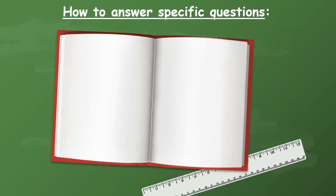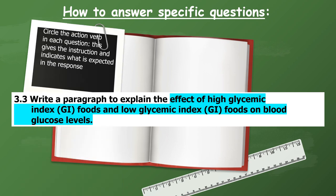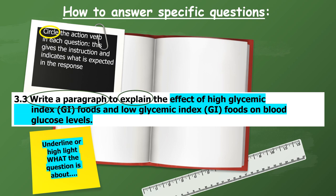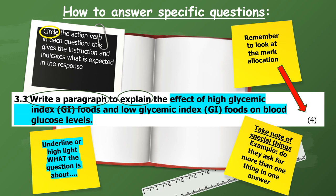We are now going to look at how to answer specific questions. When you get a question like 'write a paragraph to explain the effects of high GI and low GI foods on blood glucose levels,' it helps to circle all the action verbs in each question — this gives you the instruction and indicates what is expected. In this case it will be to write a paragraph and explain. Underline or highlight what the question is about. Always look at the mark allocation, and note if they ask for more than one thing — here they want the effect of both high GI and low GI.